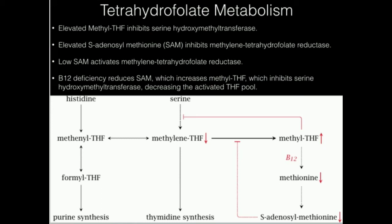Since we make many things from methylene tetrahydrofolate, when these levels fall, our ability to make methionine, S-adenosylmethionine, and thymine all decreases significantly. Therefore, B12 deficiency can produce symptoms very similar to folate deficiency, because of this allosteric inhibition cascade — B12 deficiency can disrupt one-carbon metabolism just as severely as folate deficiency.